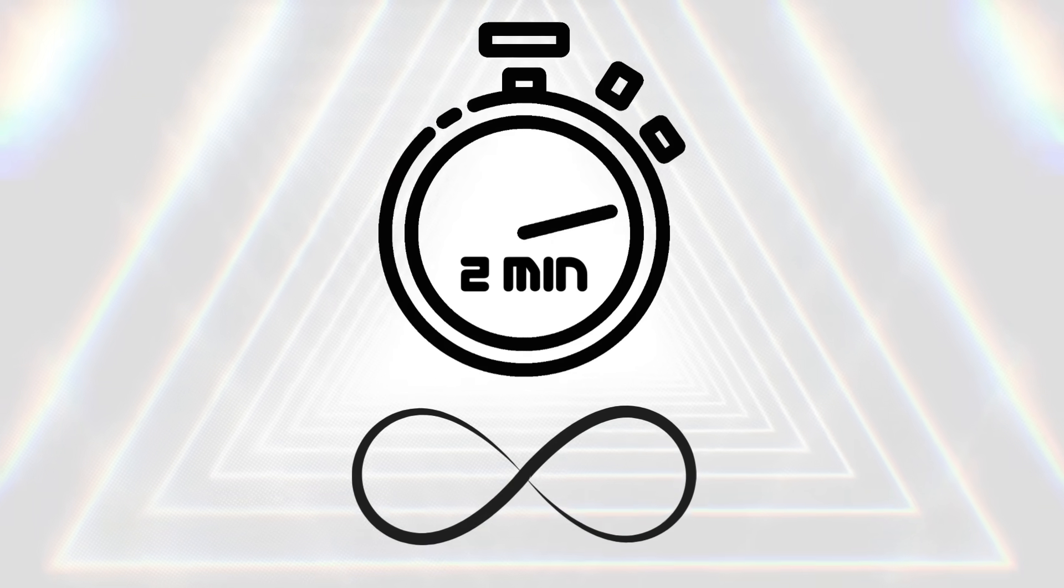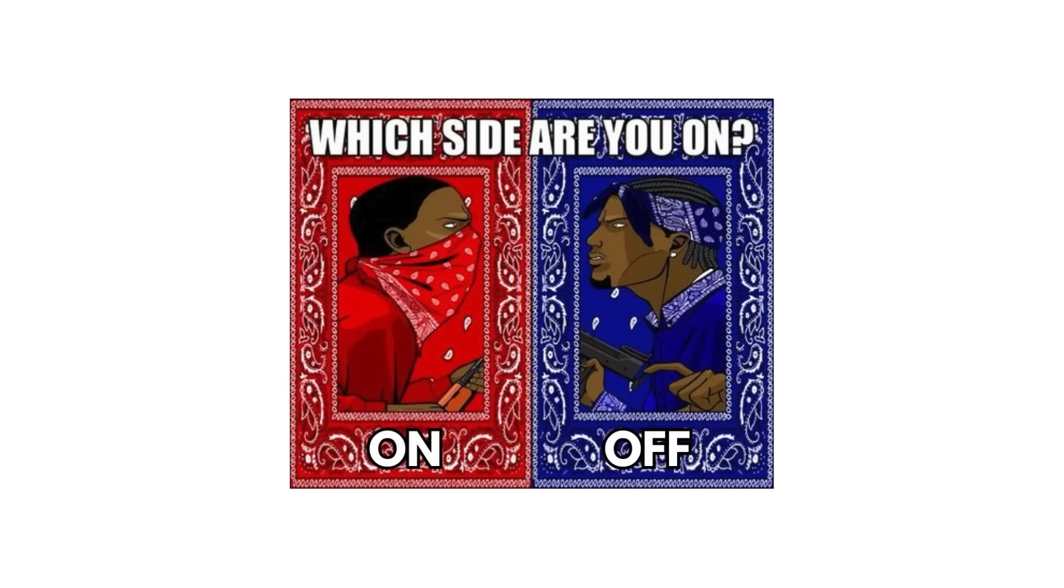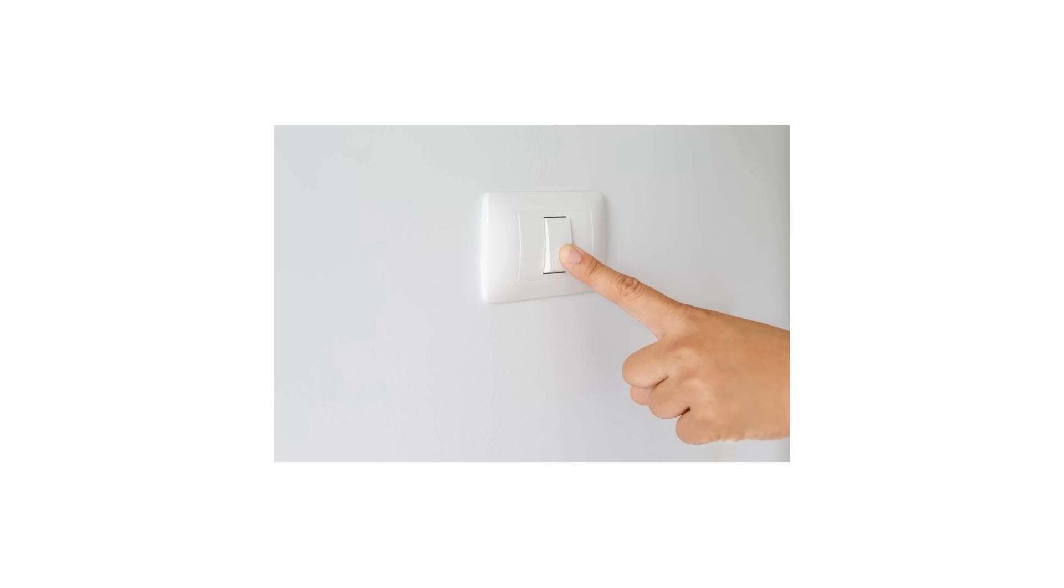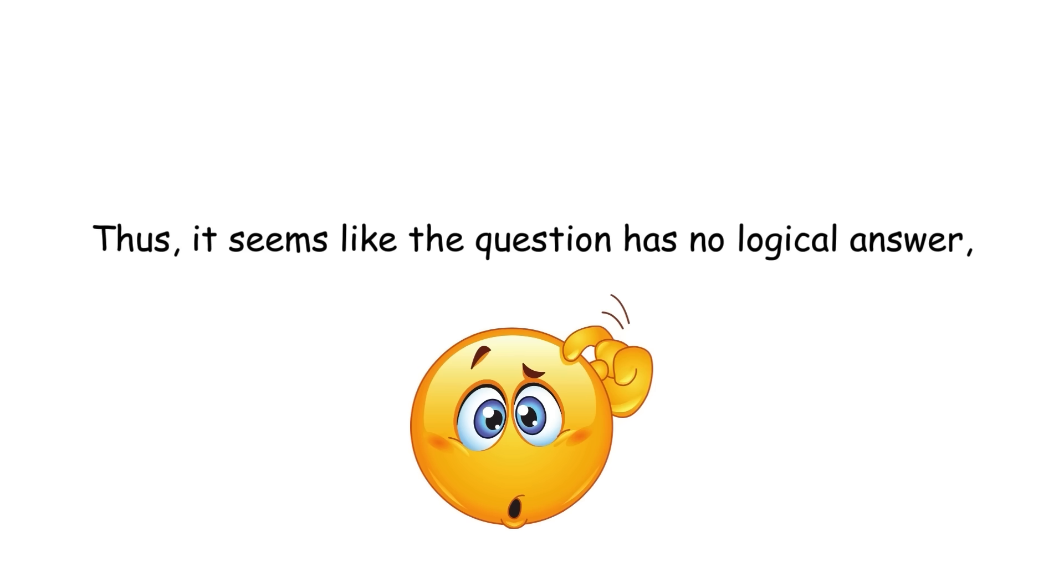Because the lengths of these intervals add up to two minutes, you will have toggled the lamp an infinite amount of times after two minutes have passed. A task like this with an infinite amount of actions in a finite amount of time is called a super task. But when you are finished, will the lamp be on or off? Each time you toggle the lamp off, it was immediately followed by toggling it back on and vice versa. Thus, it seems like the question has no logical answer which creates a paradox.